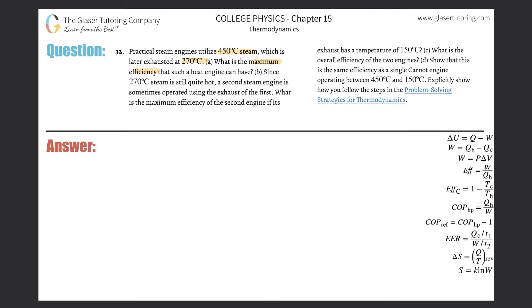So since they are asking us then to solve for the maximum efficiency, we know that the maximum efficiency is the Carnot efficiency. So this is going to be E sub C is equal to one minus temperature of the cold divided by temperature of the hot reservoir. So we simply have to just plug in, right? This one is fairly straightforward.